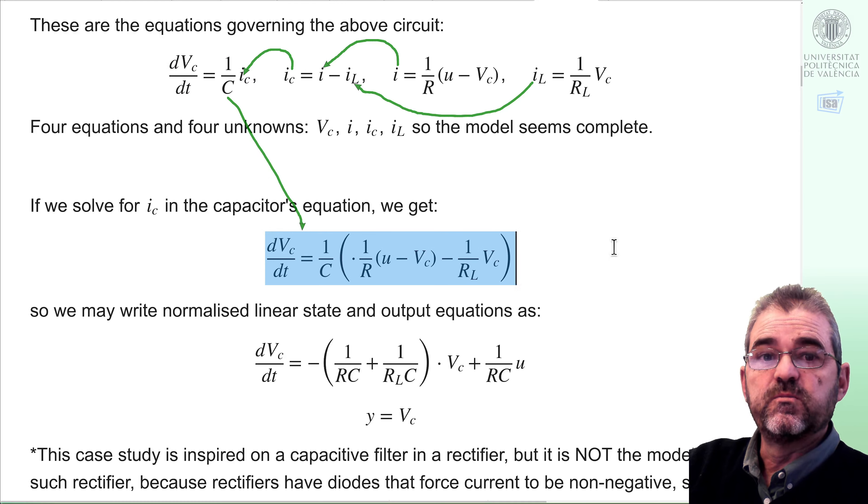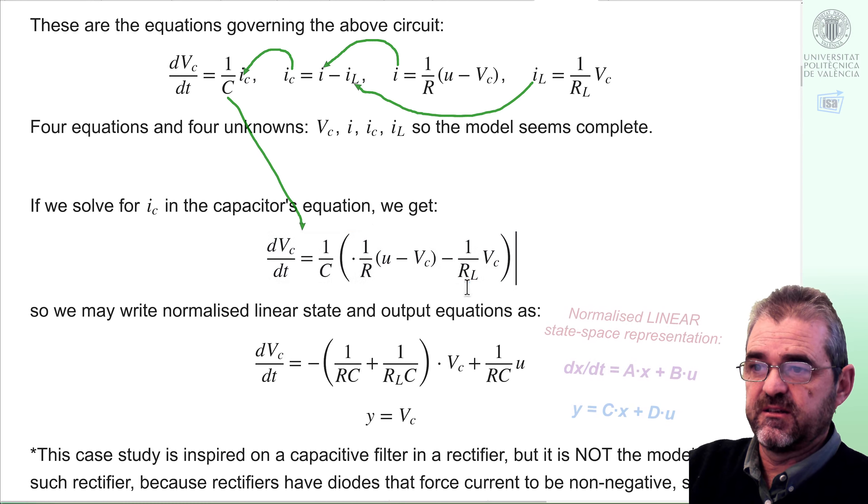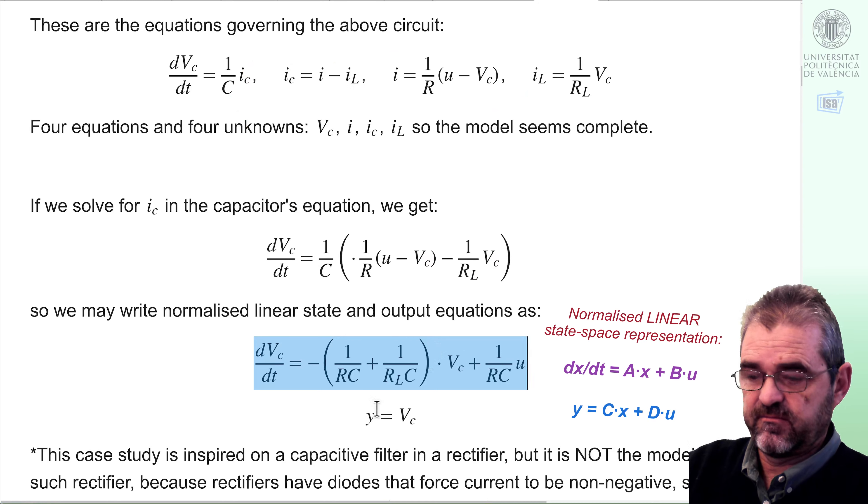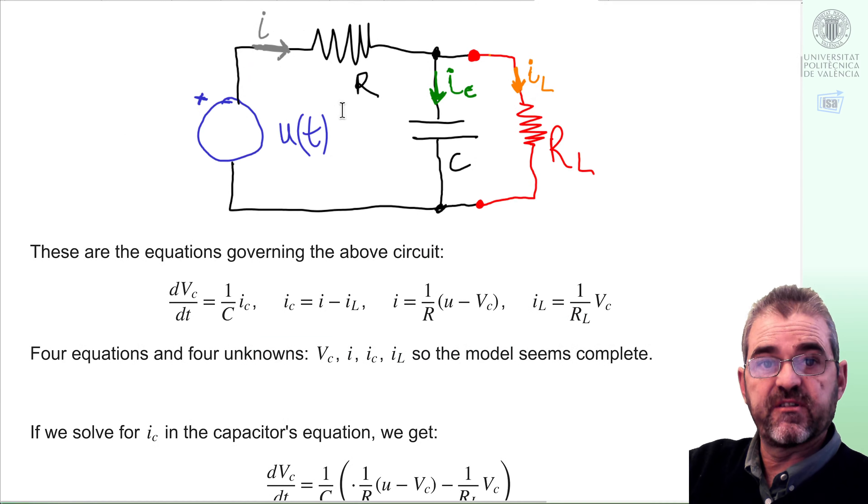So we end up being able to write this state equation. And now, just moving things and writing this in the normalized way, x dot equal ax plus bu, we have this state equation and this output equation. So we have a normalized state space representation of the above circuit.